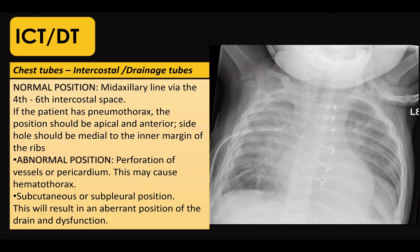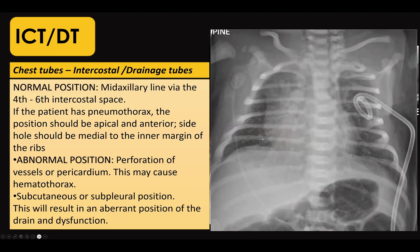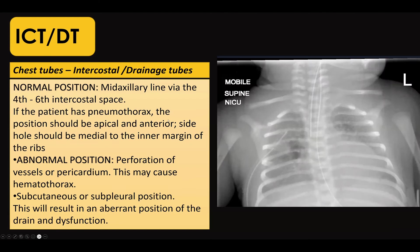For chest tubes, also called intercostal or drainage tubes, insertion should be between the 4th and 5th intercostal spaces in the mid-axillary line, preferably the anterior mid-axillary line. These are used for pneumothorax drainage — placed more apically — or fluid drainage, placed more laterally. The side holes should be medial to the inner borders of the ribs. Examples include a pigtail drainage tube with holes correctly positioned medial to the inner border of the ribs.